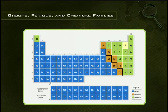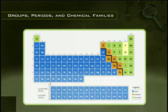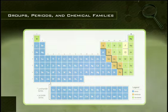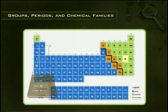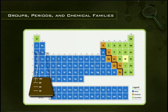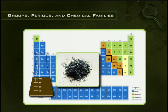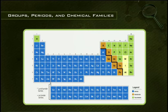The halogen family is unique — it is the only family that has all three states of matter present when the elements are at room temperature. Fluorine and chlorine are gases, bromine is a liquid, and iodine and astatine are solids.